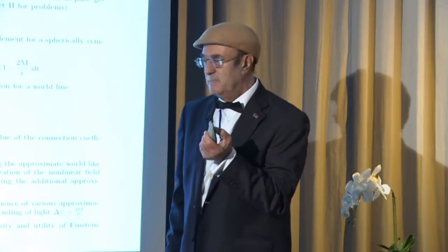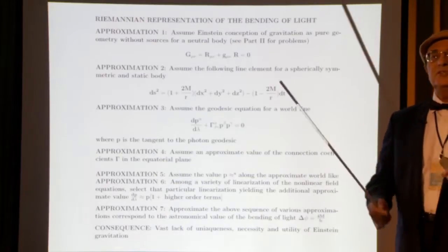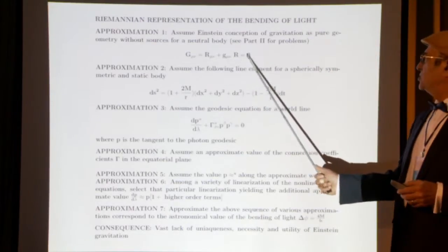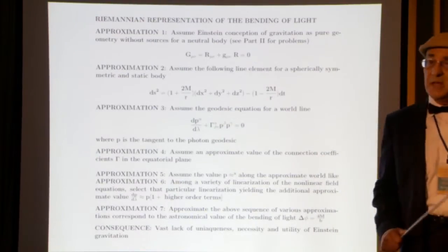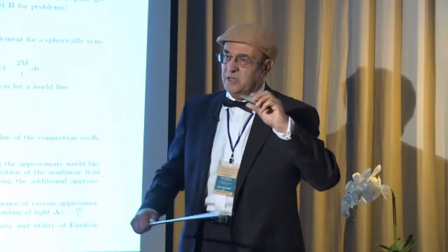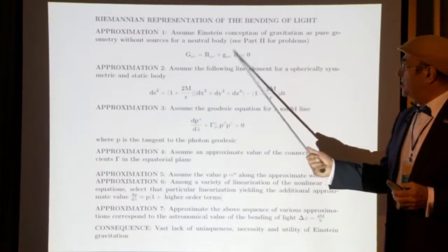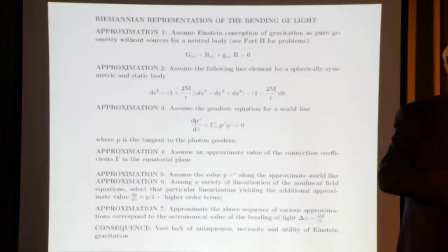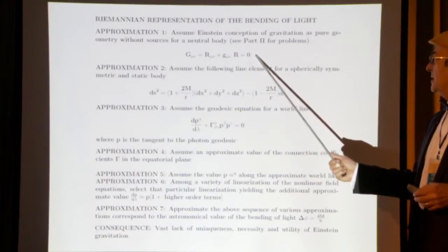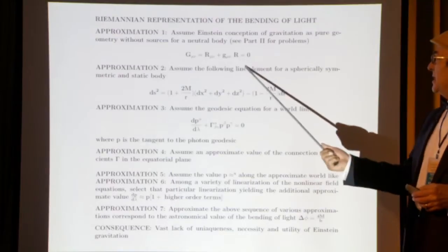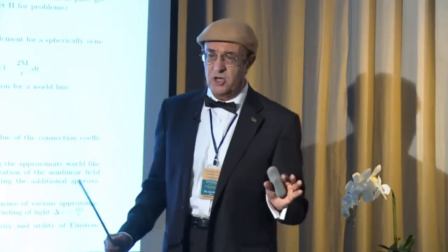Assuming the Sun is indeed charged, the contribution of that charge to the gravitational field of the Sun is 10 to the minus 40 — that's 40 zeros before you see a contribution. Just mentioning source terms due to charge in this argument is corruption, or total lack of any technical knowledge. It's corruption. This is what Einstein stated.